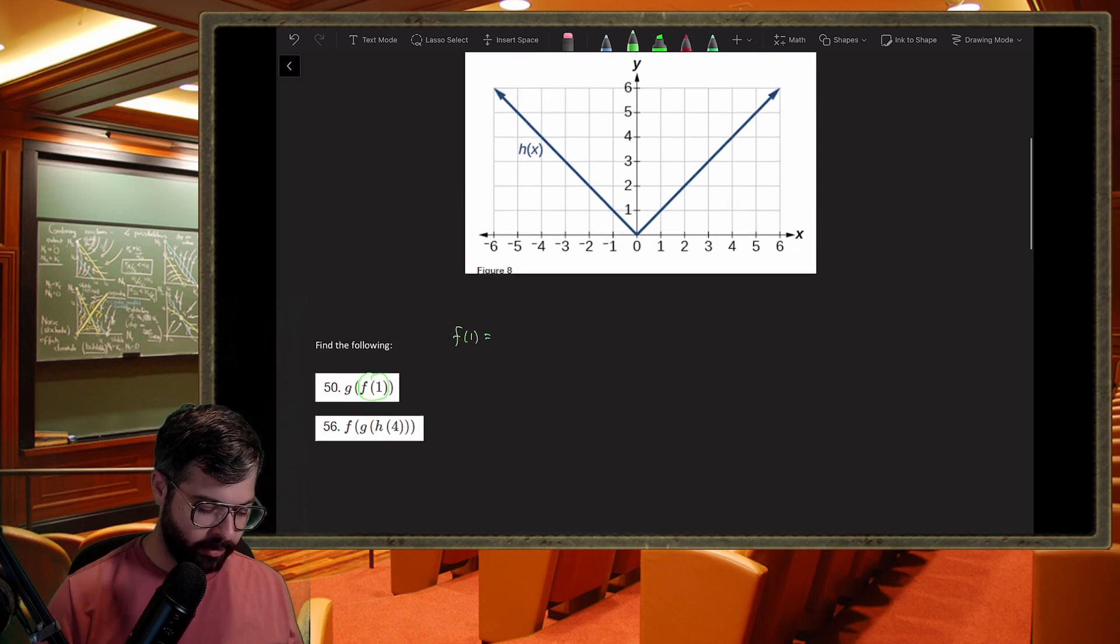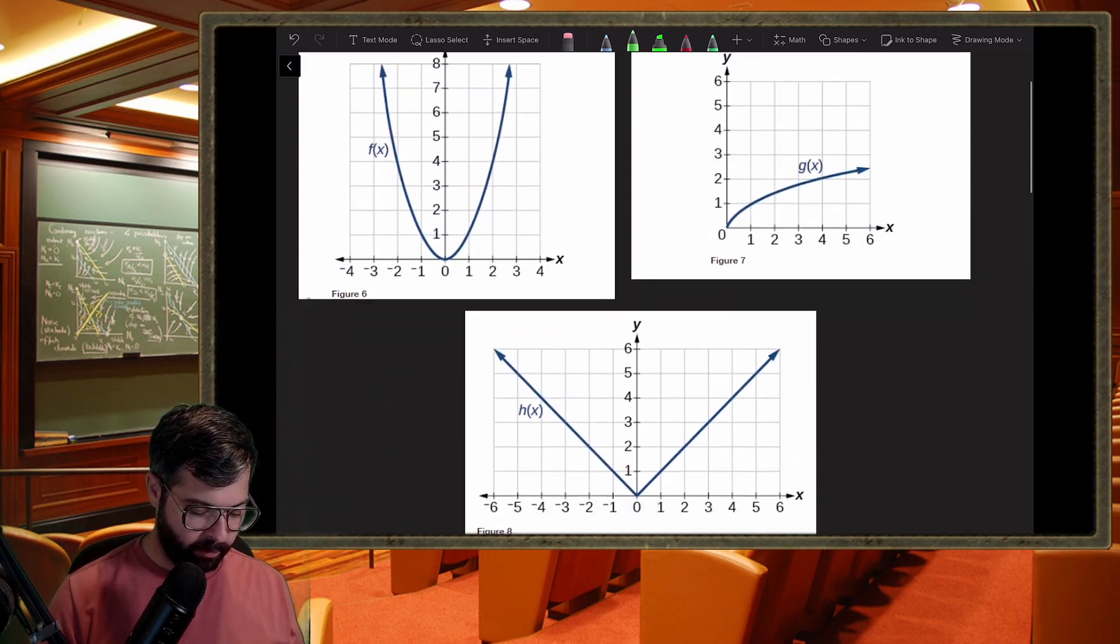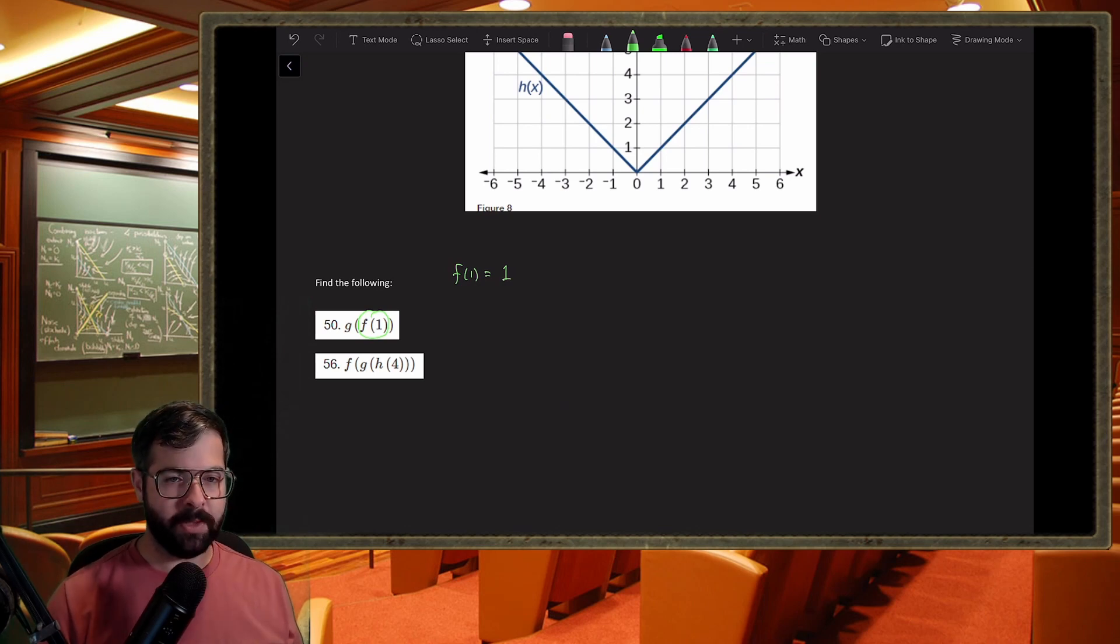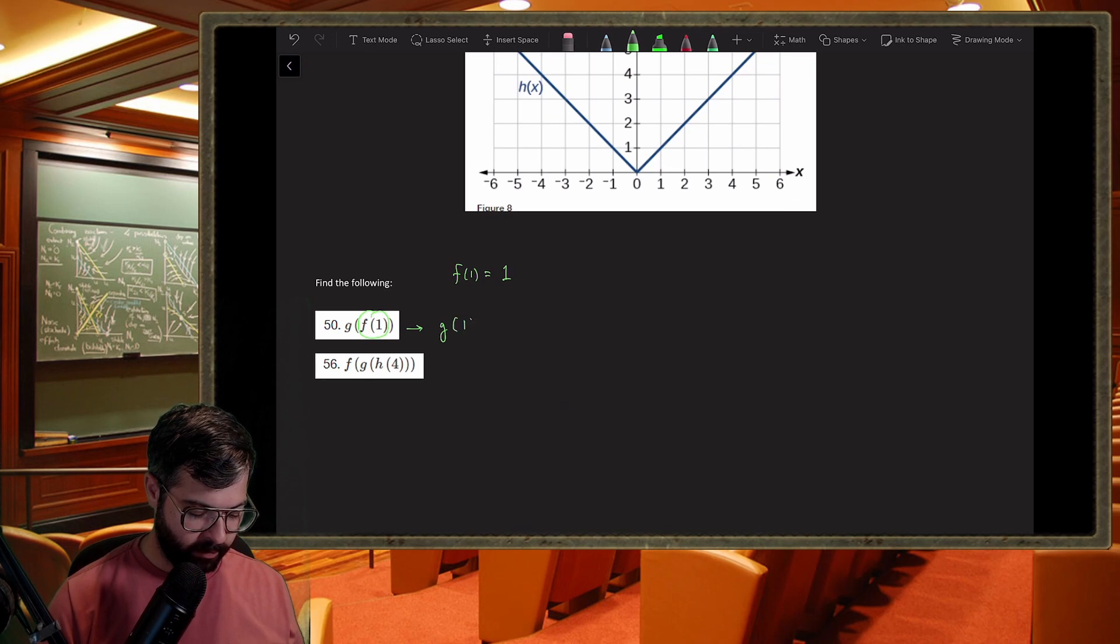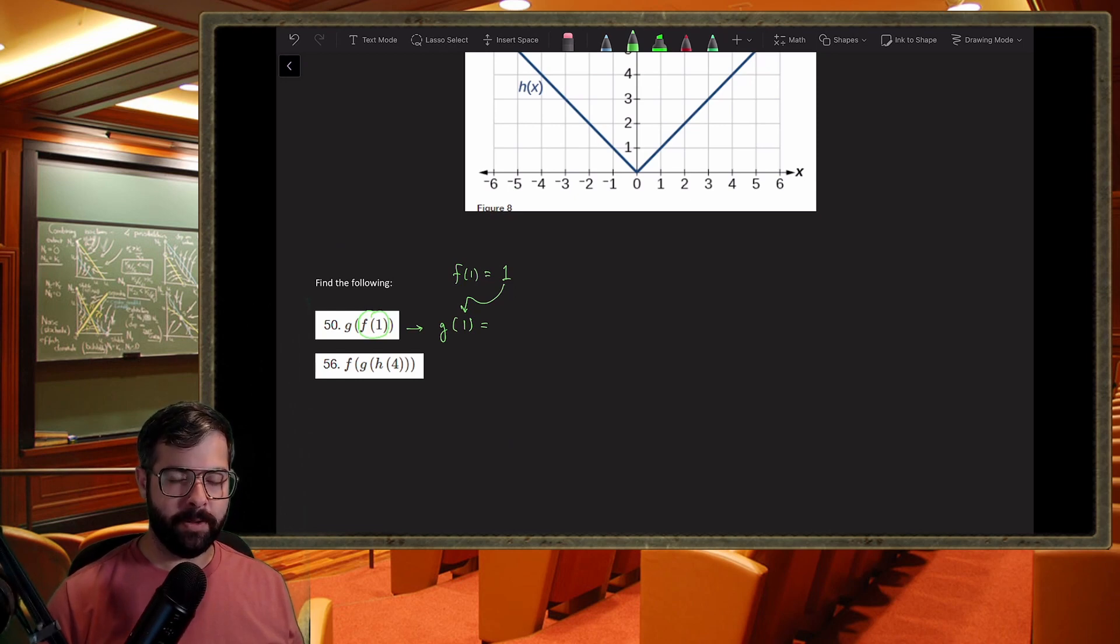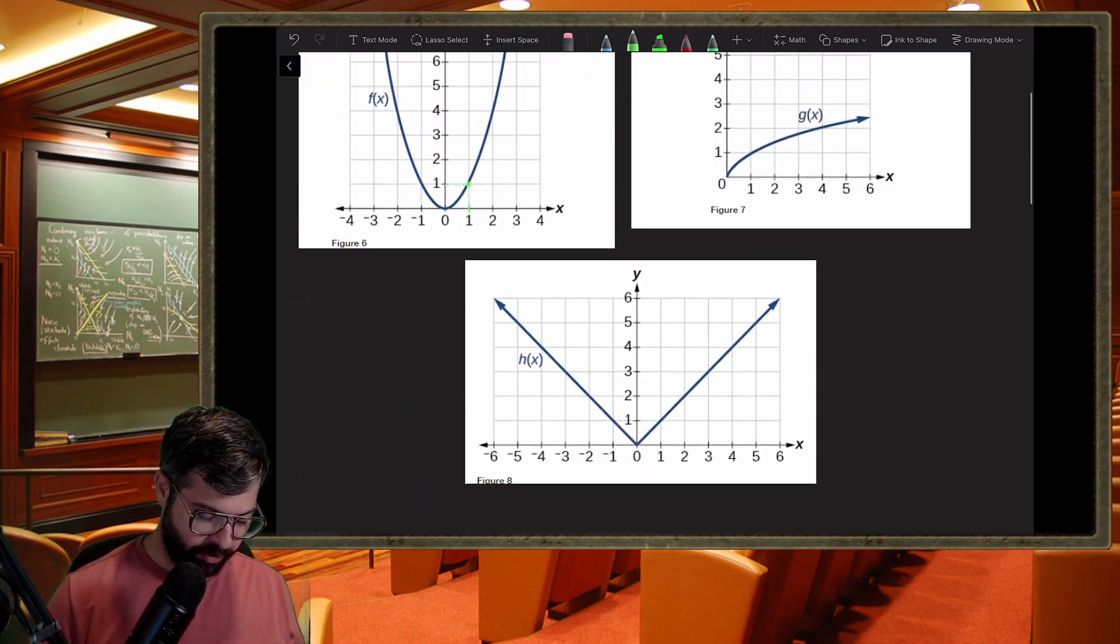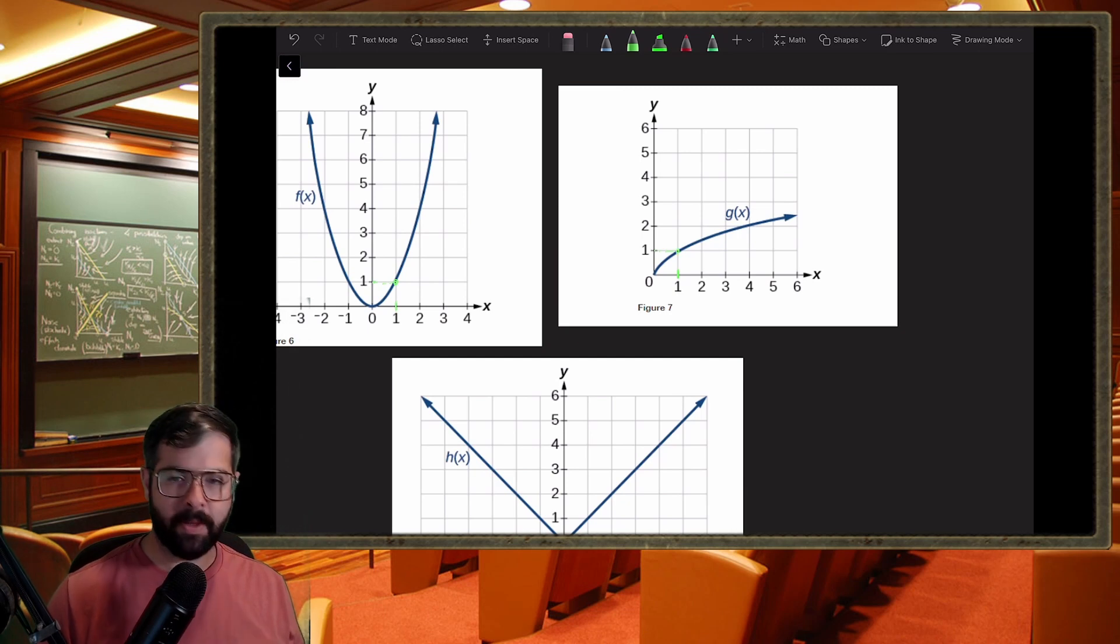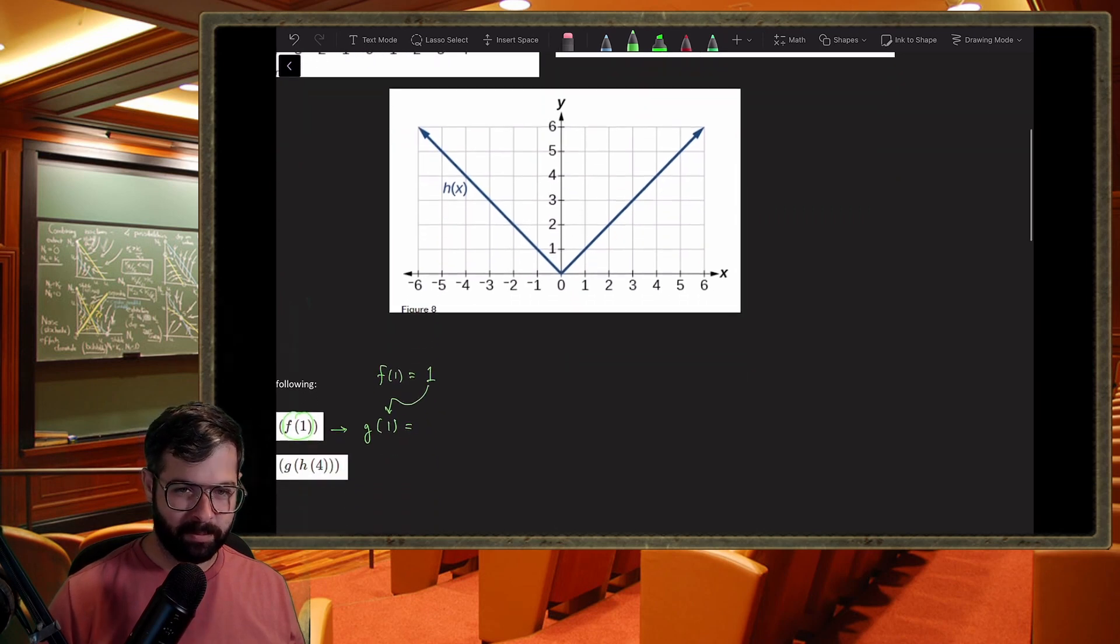So f of one - we come up to the graph of f. F of one, input of one leaves us with an output of one. So f of one equals one. So now what this notation really means is find g of one.